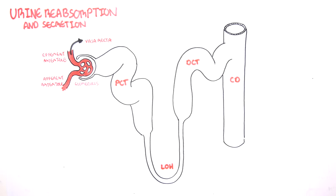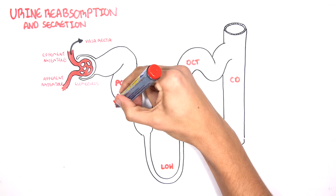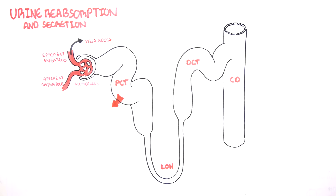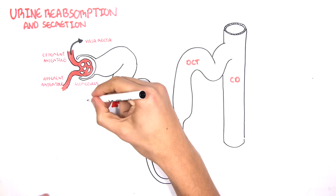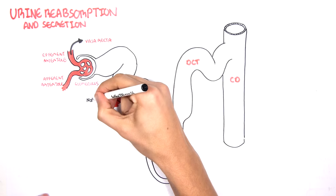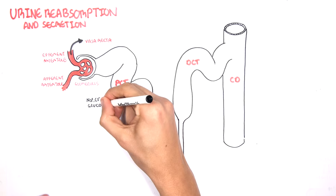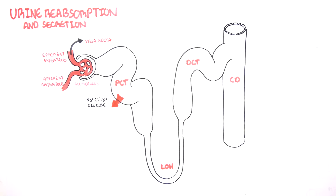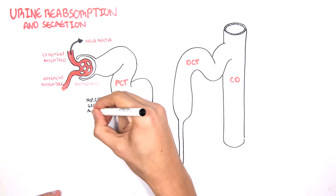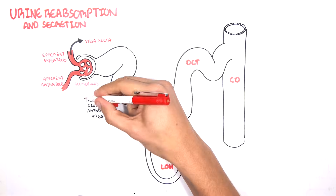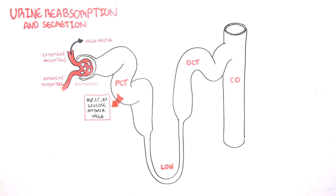Let's focus on the reabsorption of things first, beginning with the proximal convoluted tubule. Here you get reabsorption of sodium, chloride, potassium, glucose, amino acids (which are the protein building units), urea, bicarbonate, and water.